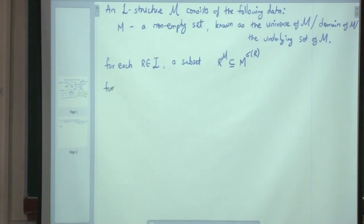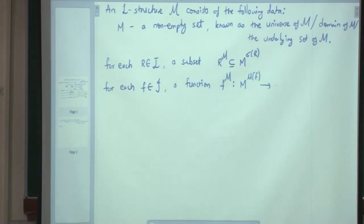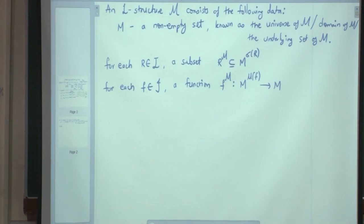For each f ∈ J, a function f^M from M^{μ(f)} to M — it takes μ(f) many inputs and gives one output. A binary function symbol is interpreted as a binary function, and a ternary relation symbol is interpreted as a ternary relation. The interpretation is just dropping the word 'symbol' — it no longer is just a symbol, it has a concrete meaning. For each c ∈ K, we have an element c^M in M.